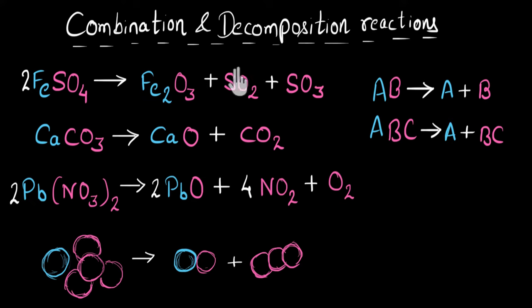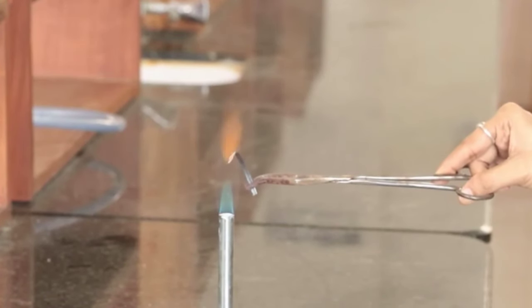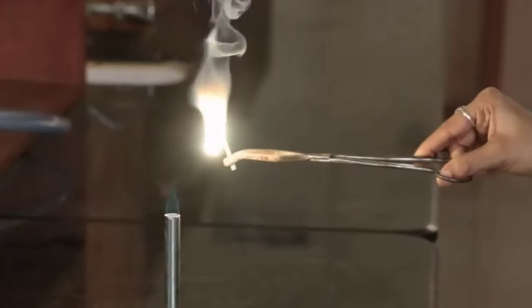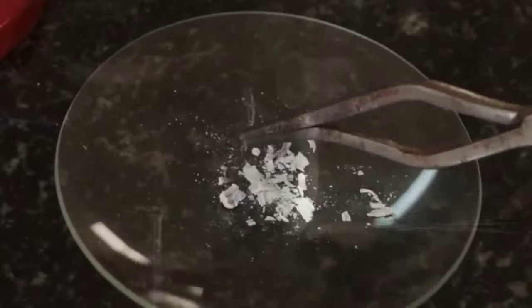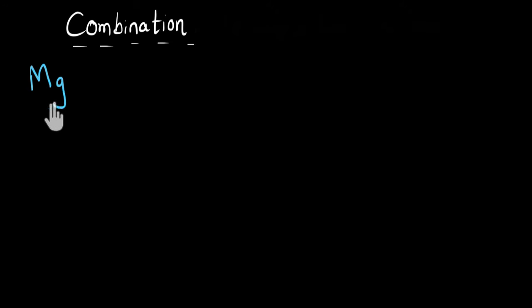Now that you know what combination and decomposition are, let's look at combination examples in more detail. Here I have a magnesium ribbon, and I'm going to burn it. You can see it burns with a dazzling white flame — a lot of light and heat energy is given out. After the reaction, we are left with a white powder. This whole reaction is an example of combination reaction. Let me write down this equation.